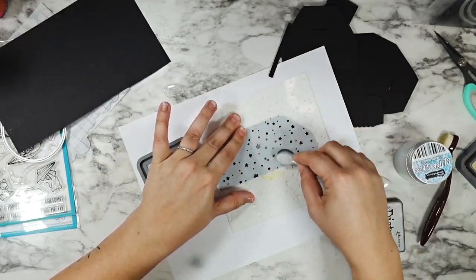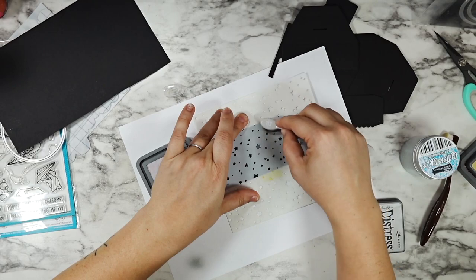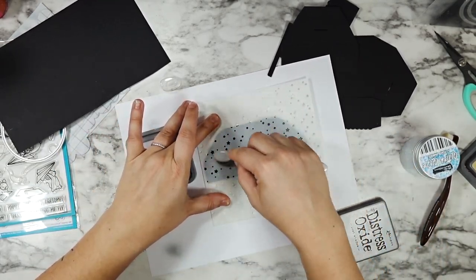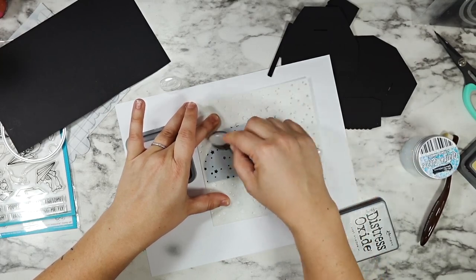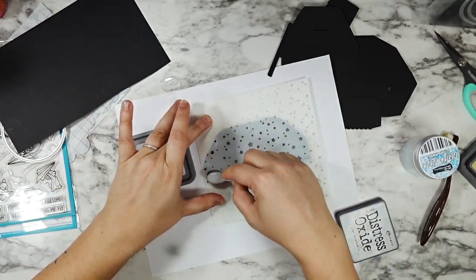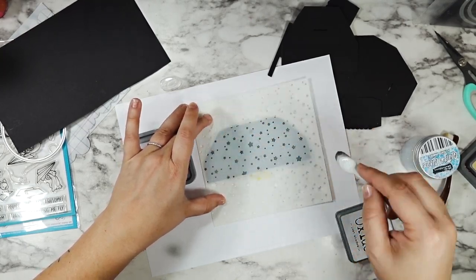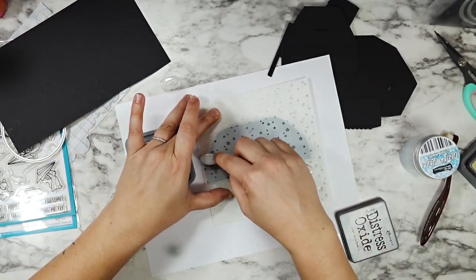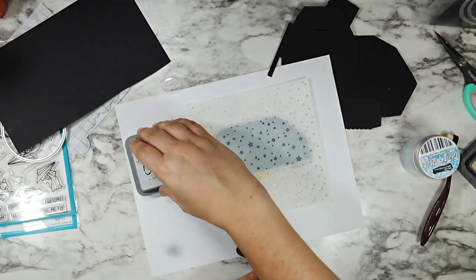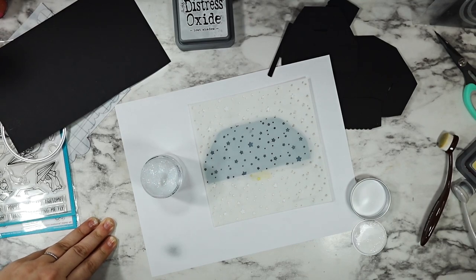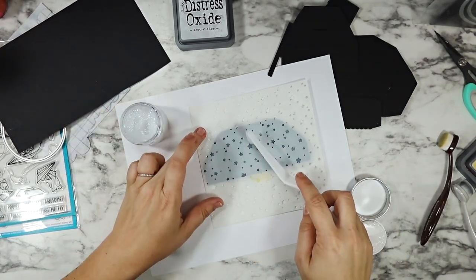So to this screen I am going in with some Lost Shadow Oxide ink to just get a really nice soft gray, almost white tone to these stars. I'm using the Starry Sky stencil also from Lawn Fawn and just a mini blending brush from Simon Says Stamp.